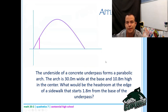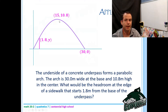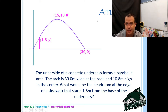The question asks for the headroom at the edge of a sidewalk that starts 1.8 meters from the base of the underpass. So I have the arch, I know the point 30 comma zero and the vertex 15 comma 10.8, and I'm looking for the height when x is 1.8.